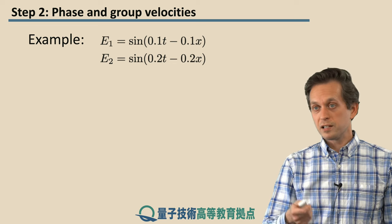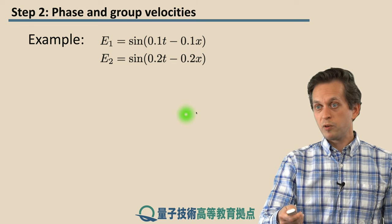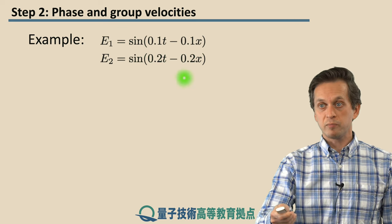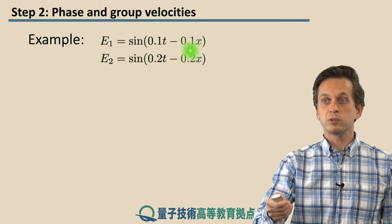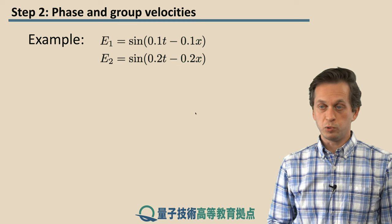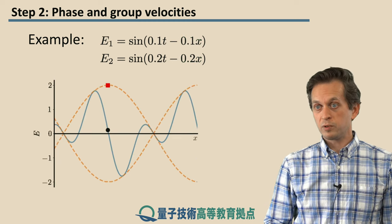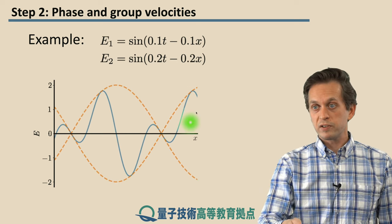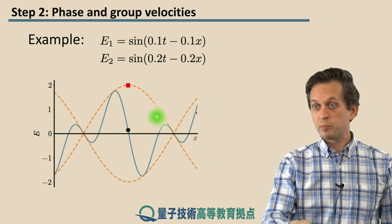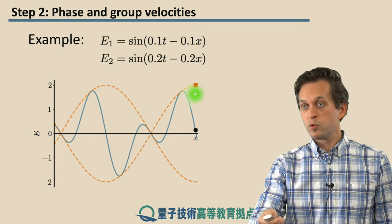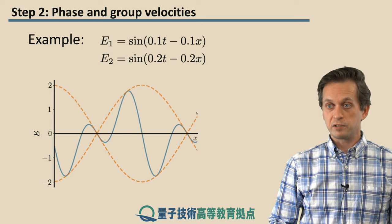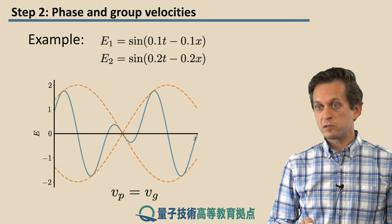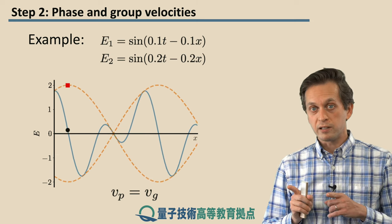But this is not always the case. Let's look at this following example. We kept the same angular frequencies for the two waves, but we changed the wave numbers. Now, E1 has k equal to 0.1 and E2 has k equal to 0.2. Let's see what that looks like. As you can see, now the group velocity and the phase velocity are the same. The black point and the red square move at the same velocity.